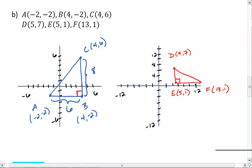I found the 8 from taking the y coordinates here and realizing that 6 minus negative 2 is 8. I realized the 6 by taking the x coordinates here, 4 minus negative 2 is 6. So this triangle has sides of lengths 6 and 8.